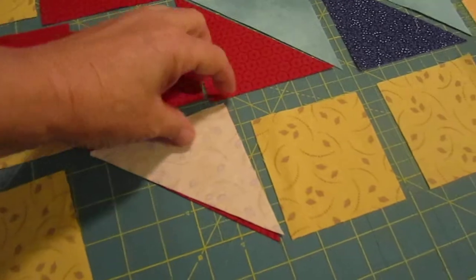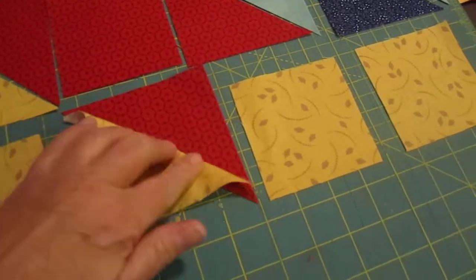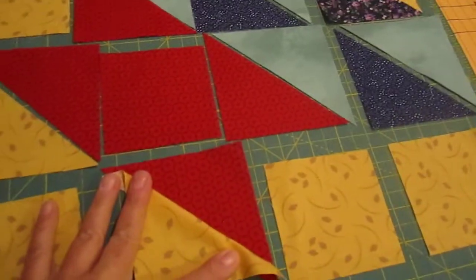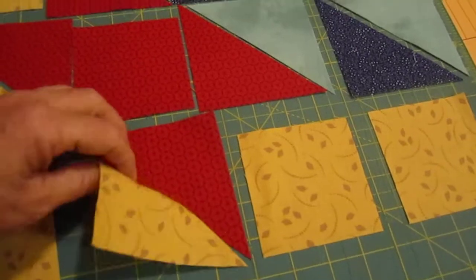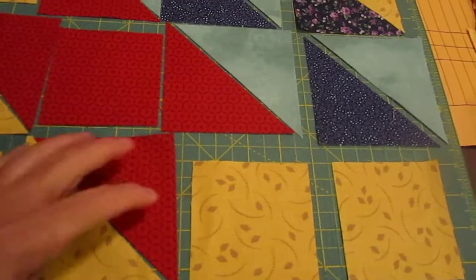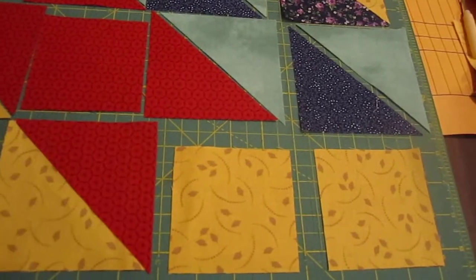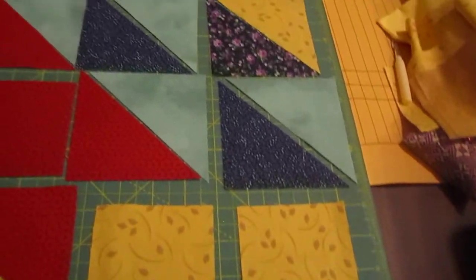When we open them up, they'll be like this, and then we'll cut them down into three-and-a-half-inch squares. Once you get all your triangles sewn together and trimmed down to three-and-a-half inches, they should be the same size as these.